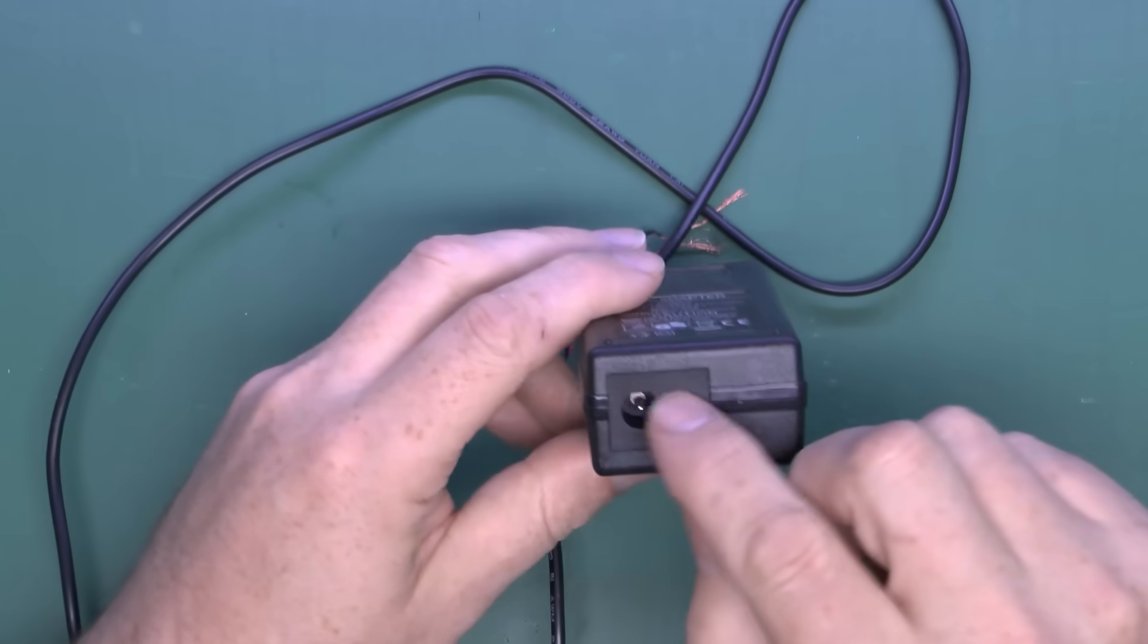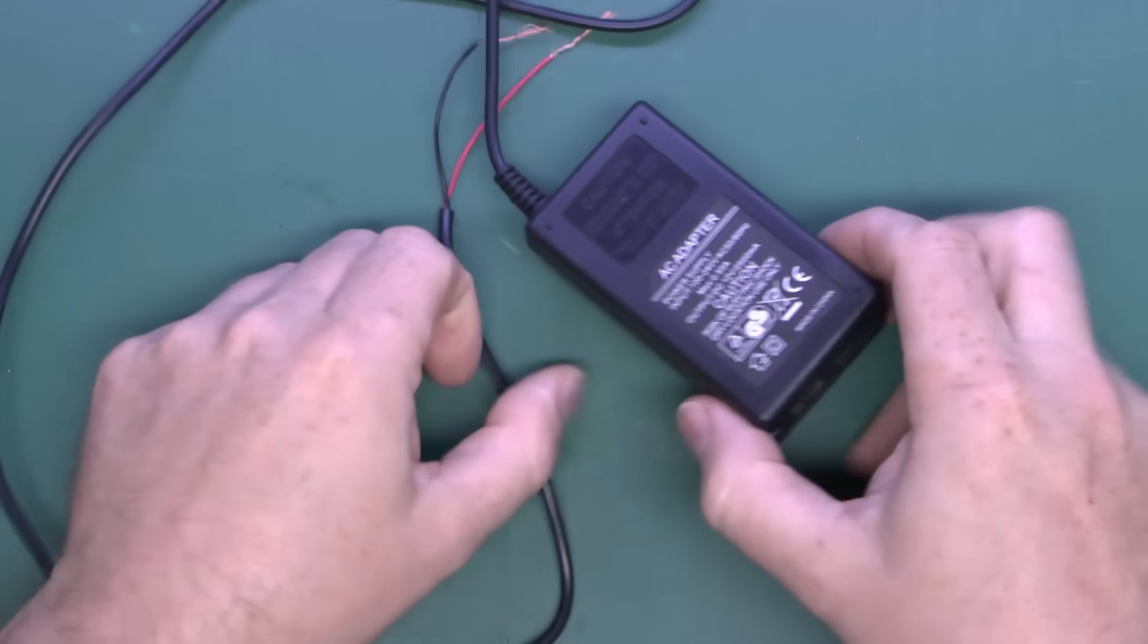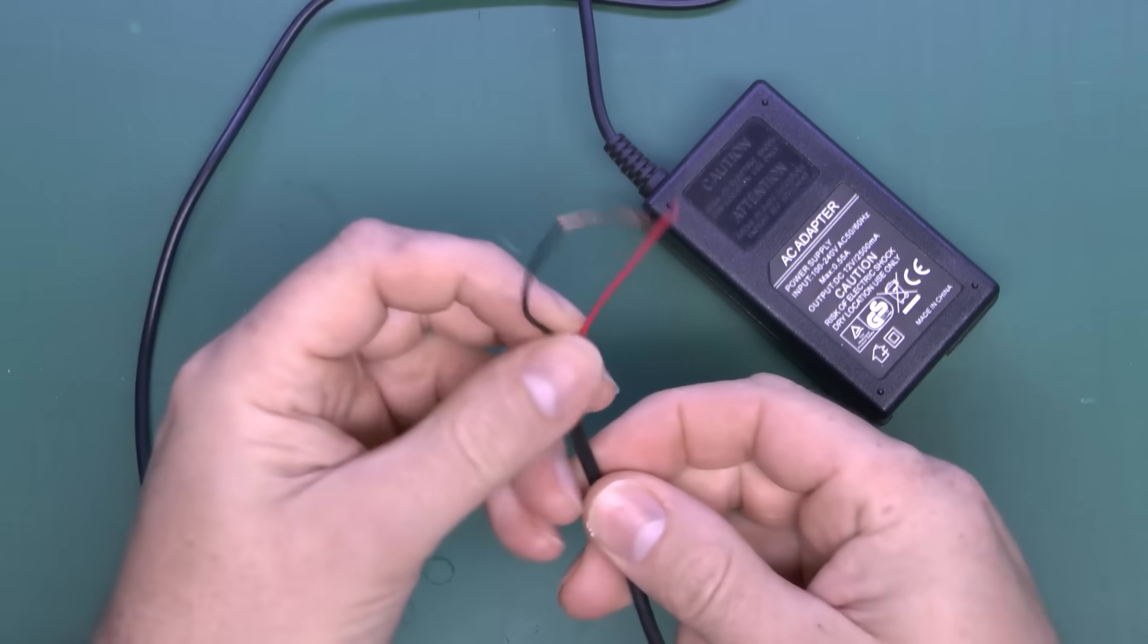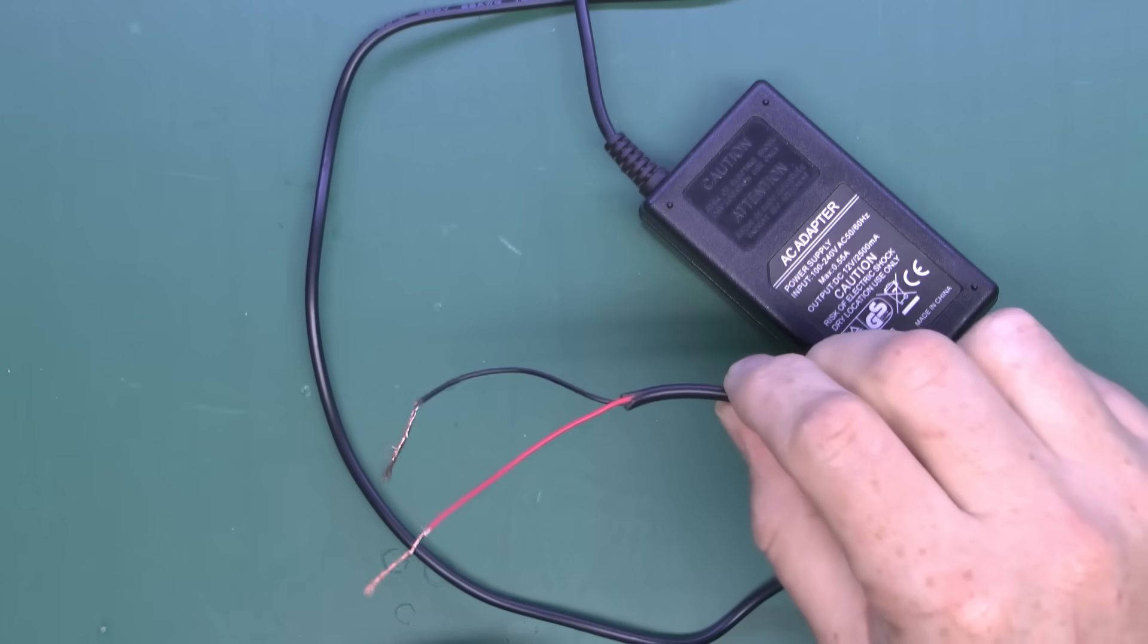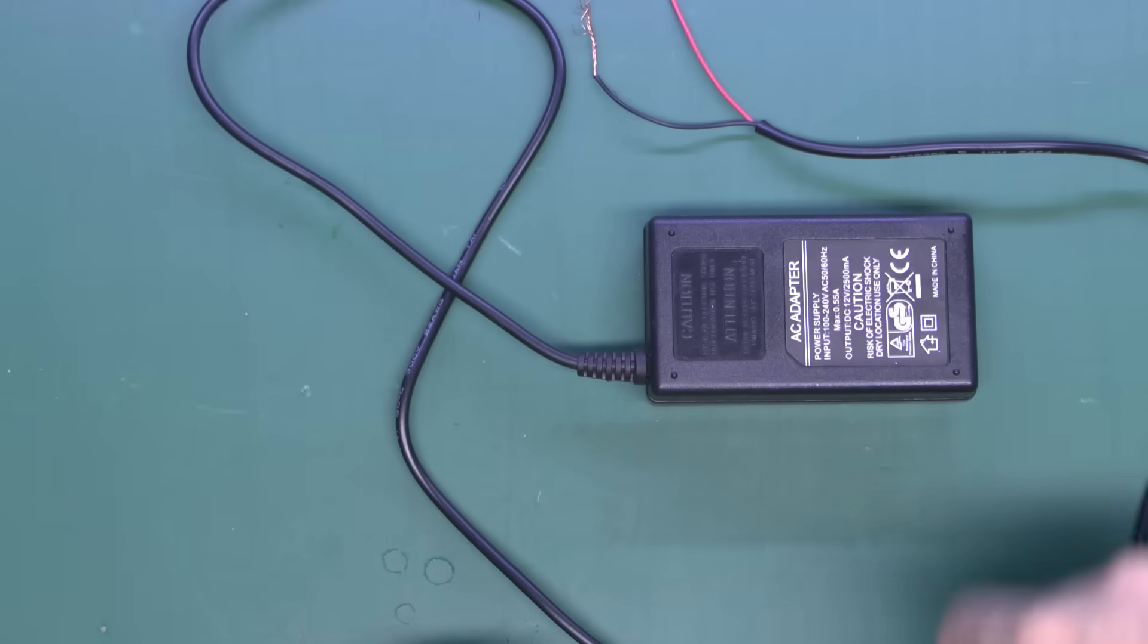You can put mains in here, it doesn't blow the fuse or anything. It takes the power fine but no current is used and absolutely nothing comes out on these wires, no voltage whatsoever. Clearly something has failed internally.